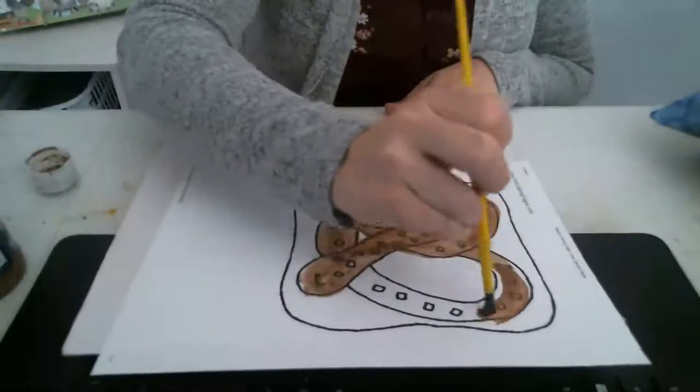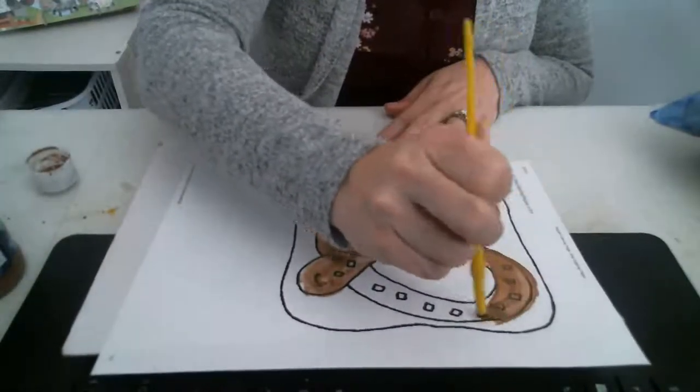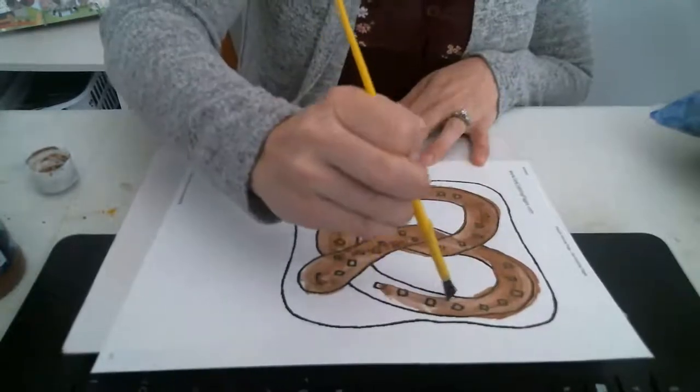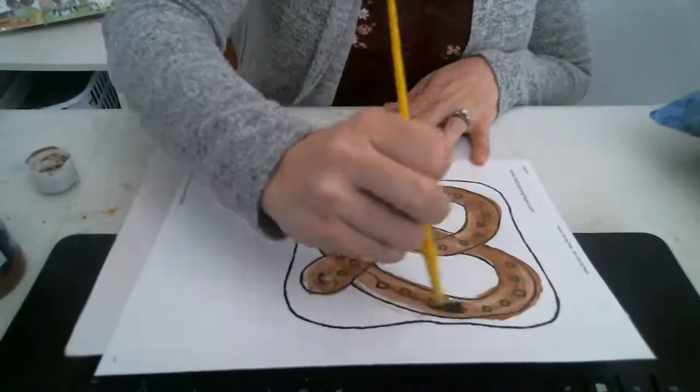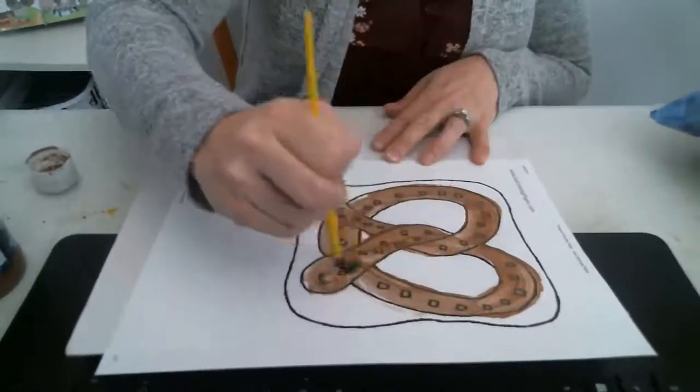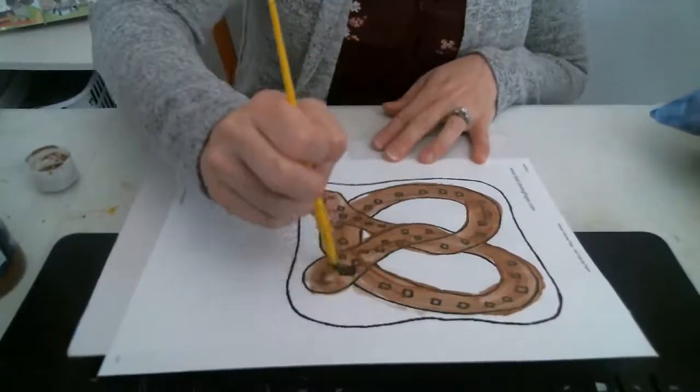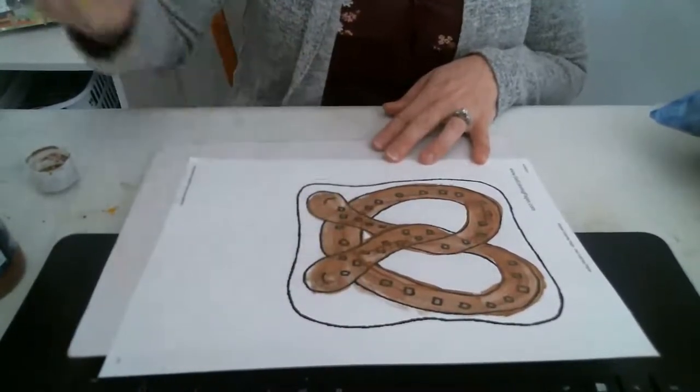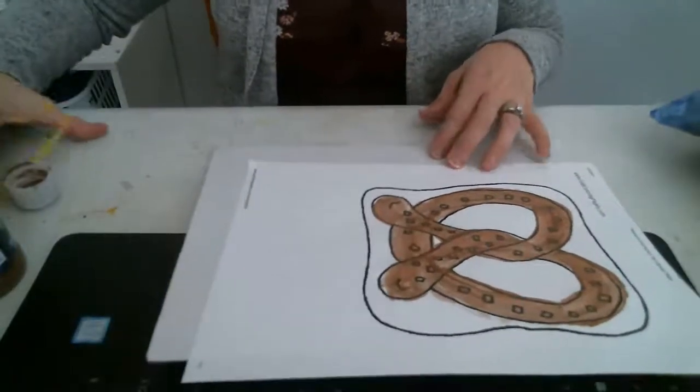Now, see, I'm just painting mine. You can use markers or crayons. You can use colored pencils if you have them. And I'm just painting my pretzel picture. And see, it was really actually pretty quick. It didn't take long at all.